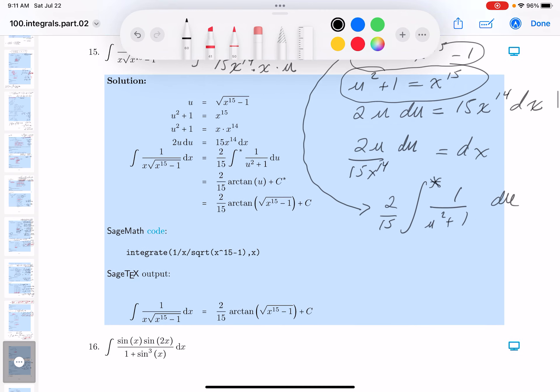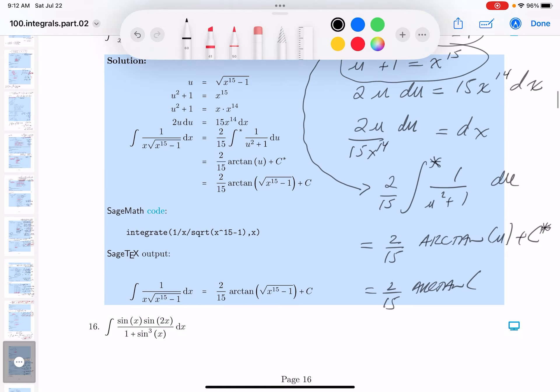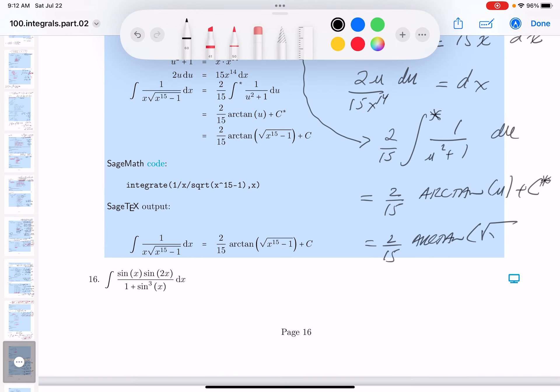And what's that going to be? U squared plus 1. Boy, that worked out nicely because I recognize that guy now. Was it going to be two fifteenths? This is the arctan of u plus some constant of integration. Two fifteenths arctangent. What's u? Well, it's written up here. It's the root of x^15 minus 1 plus C.